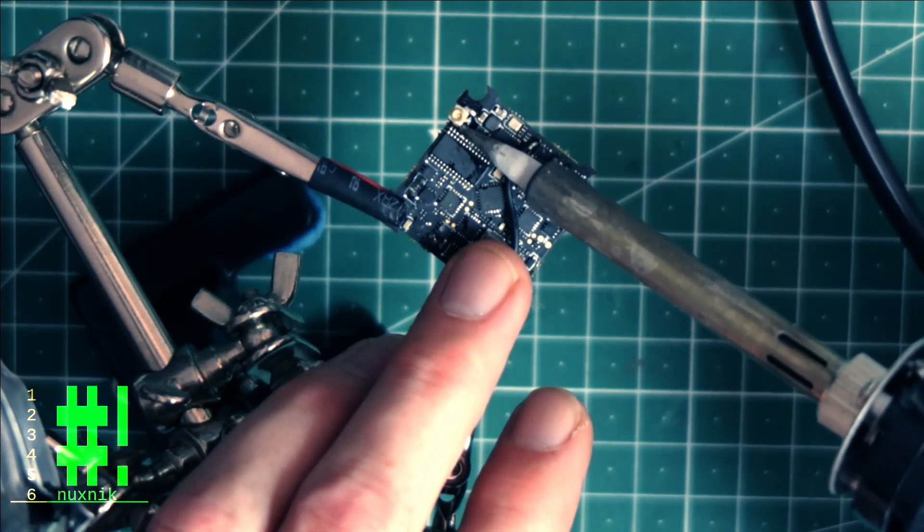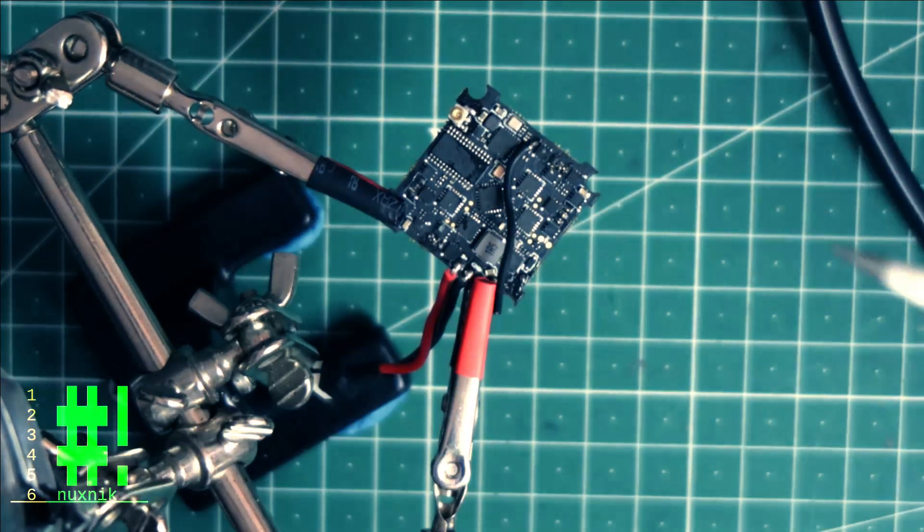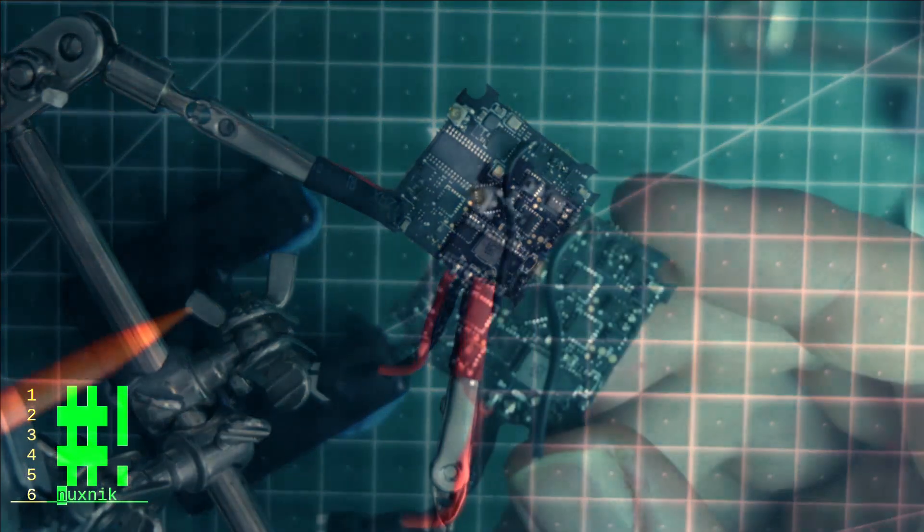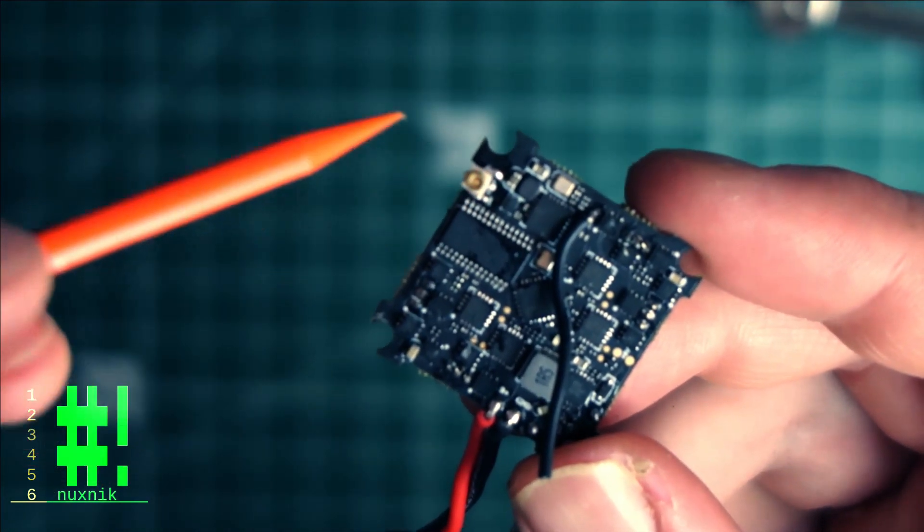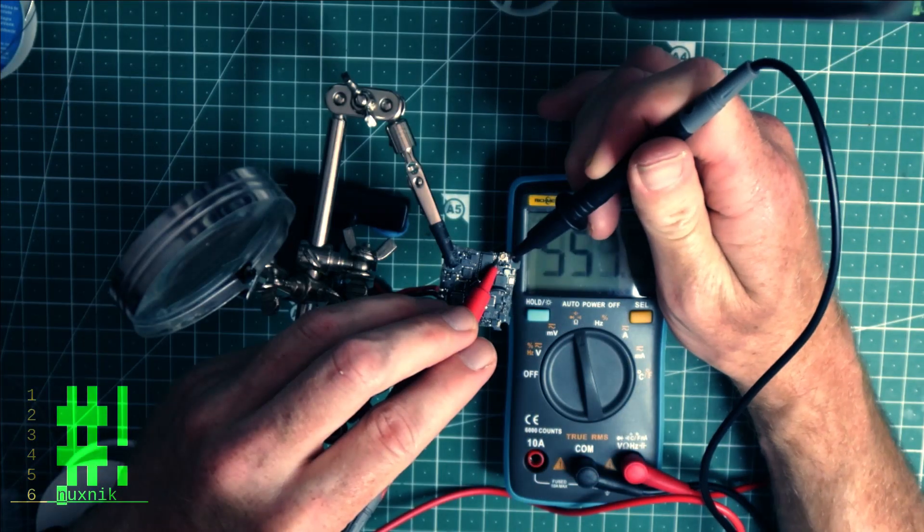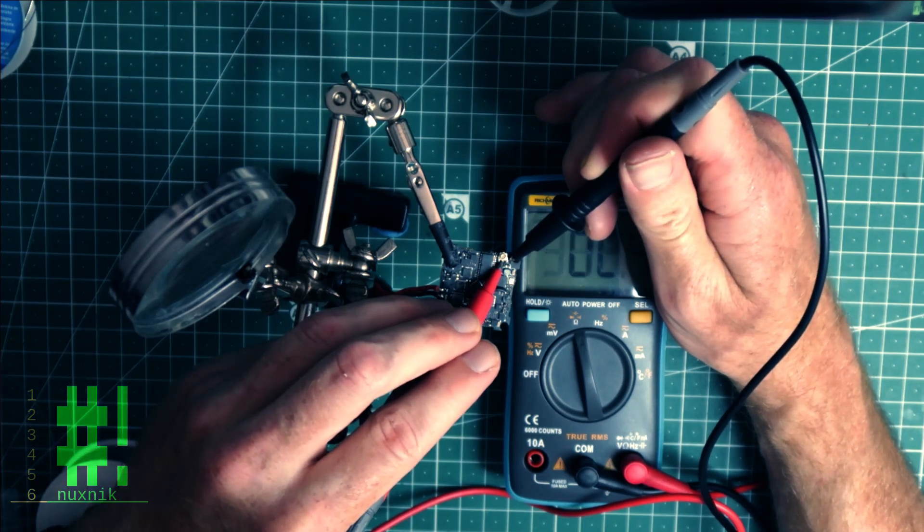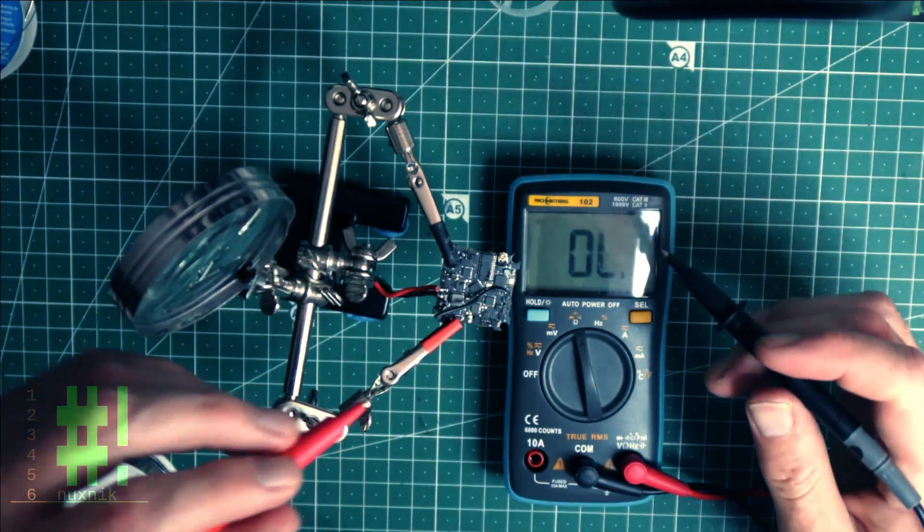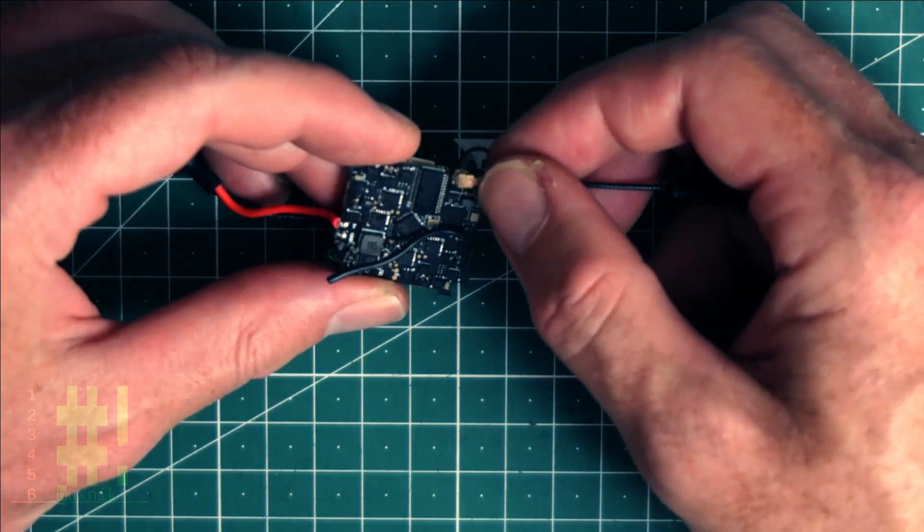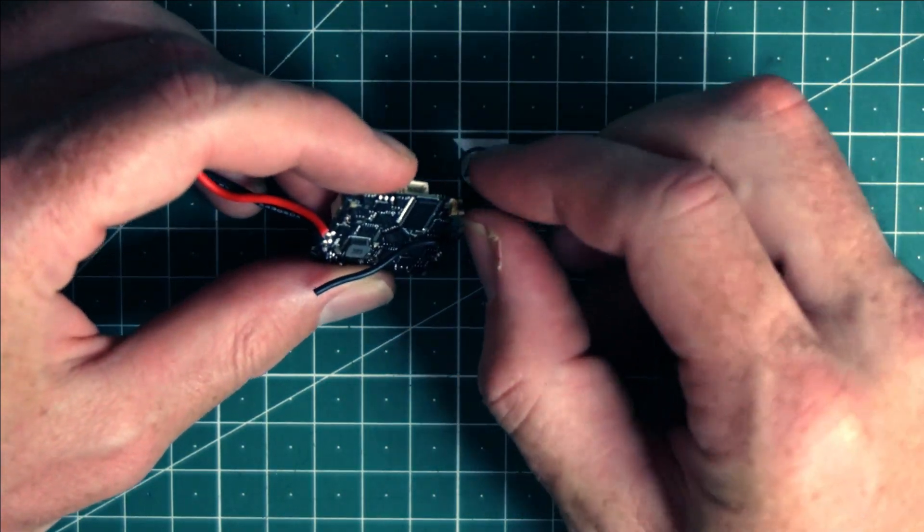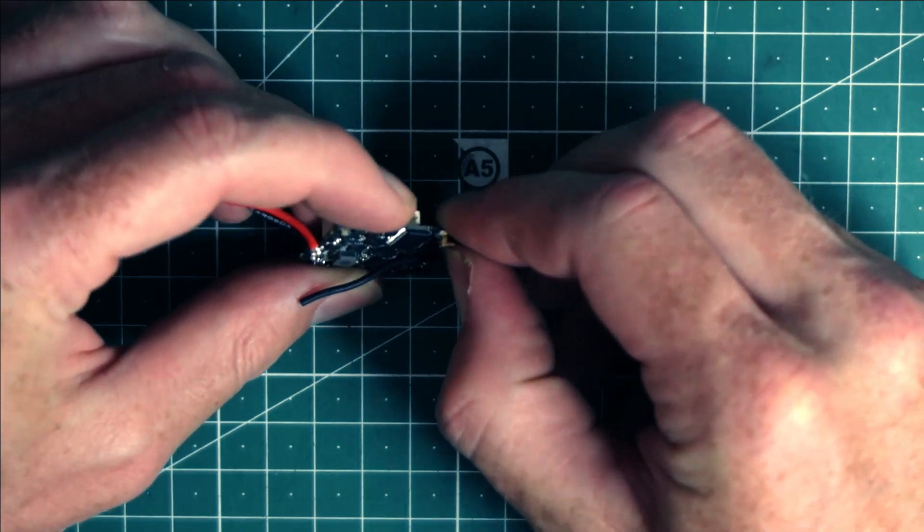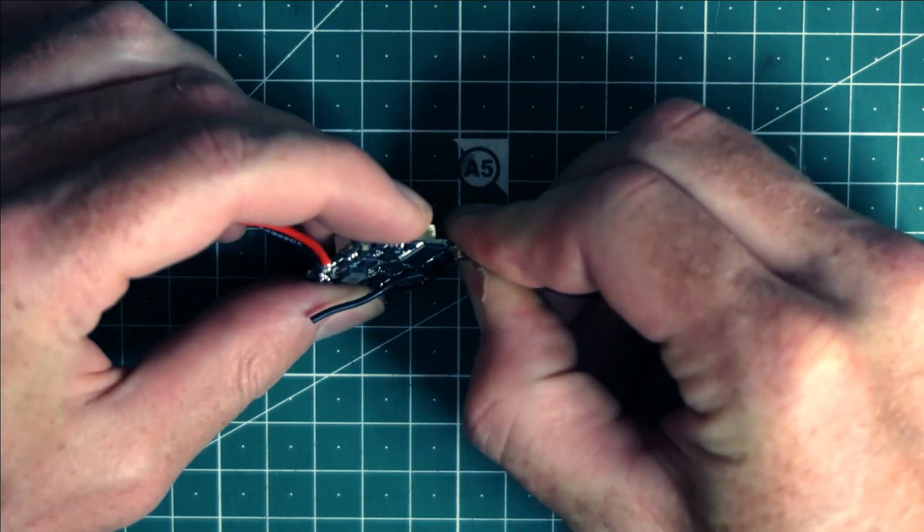Before continuing, make sure that the connections are solid. With your tweezers, pull on the connector from different angles to test for loose or unconnected solder joints. Next, set your multimeter to continuity mode and probe the connector to make sure that the connections are not shorted out to one another. These checks are very important. If your connections are not solid or shorted, you will fry your video transmitter.